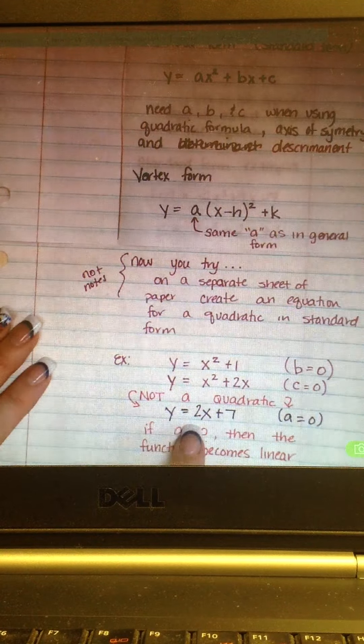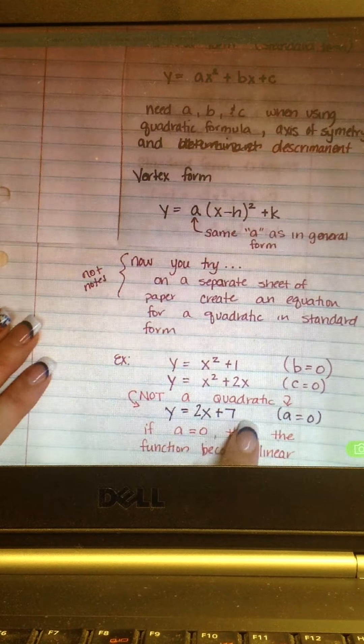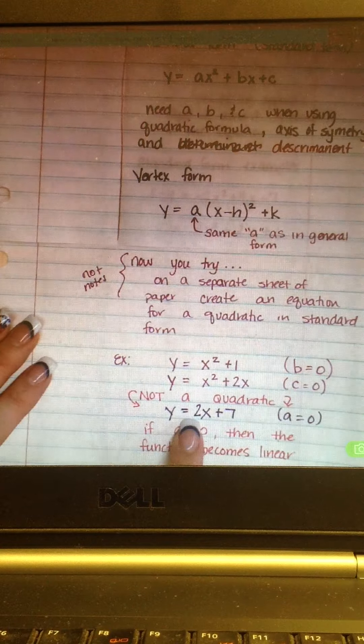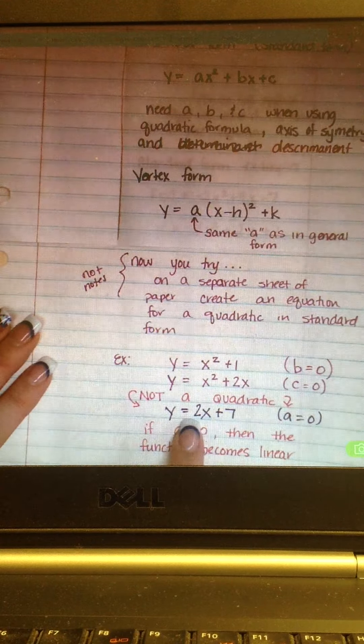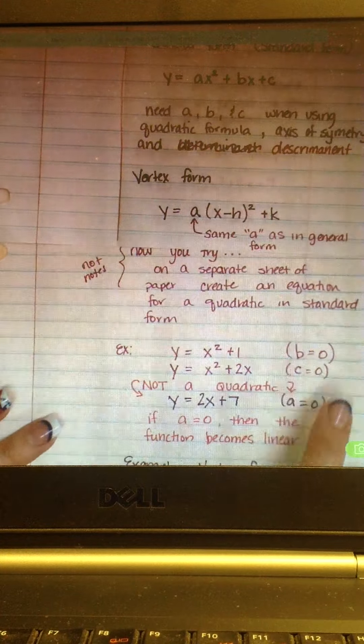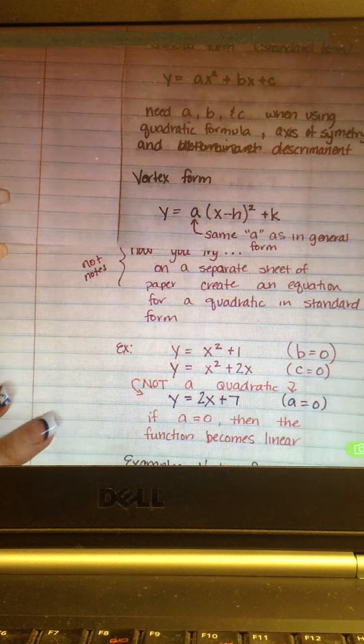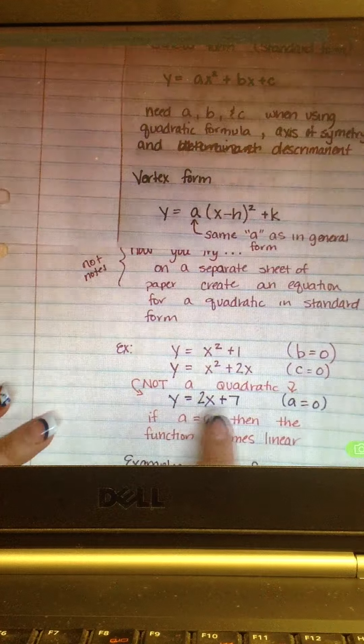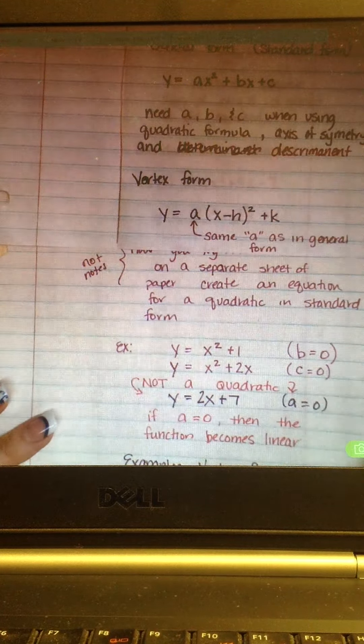This one, however, y equals 2x plus 7. Well, it doesn't have a squared. That means it's not quadratic anymore. If your A equals 0, then it's not actually quadratic. It becomes a linear function instead of a quadratic. More like a y equals mx plus b kind of formula than a quadratic.